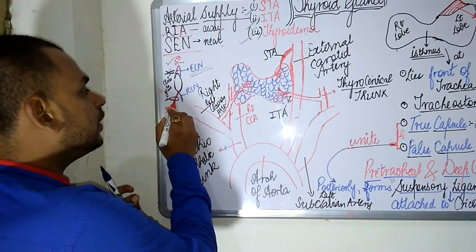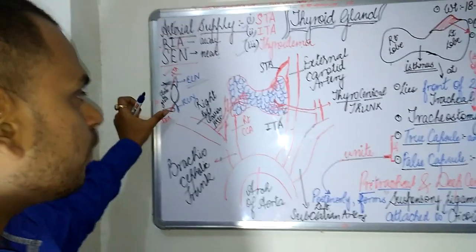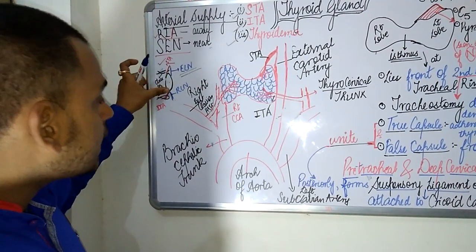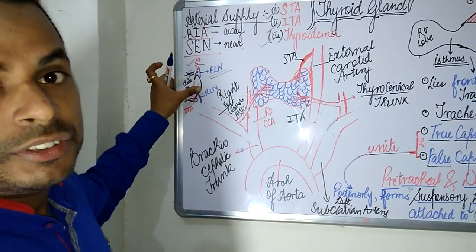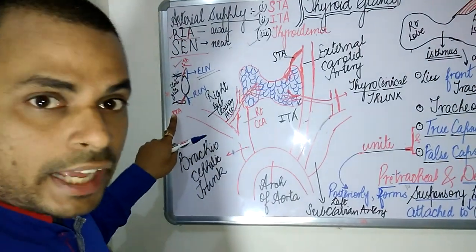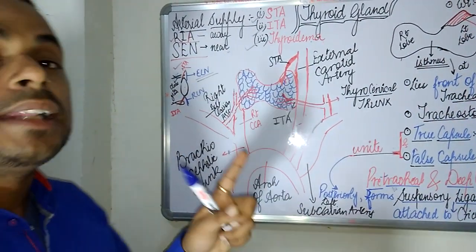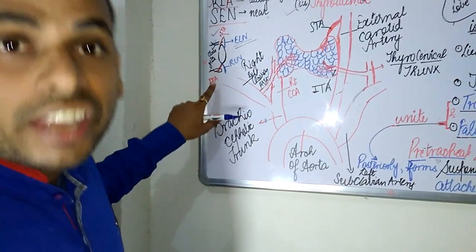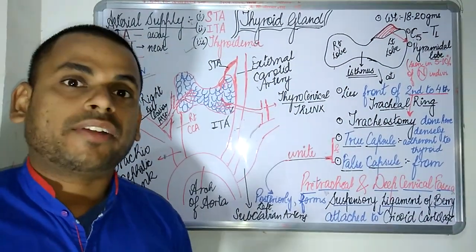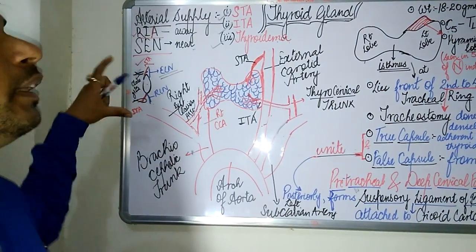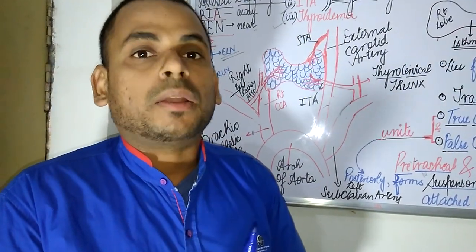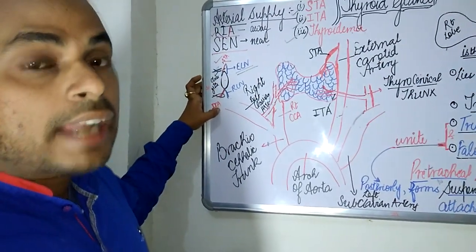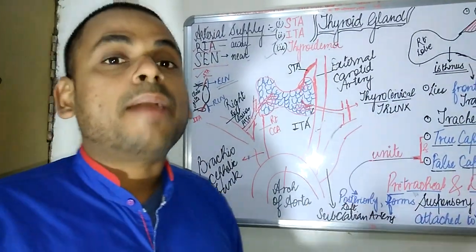For the inferior thyroid artery, the recurrent laryngeal nerve lies in close proximity towards the substance of the gland. Therefore, at the time of surgery, the ligation of the inferior thyroid artery should always be done away from the gland, to prevent any damage to the recurrent laryngeal nerve. In summary: superior thyroid artery — ligate close to the gland; inferior thyroid artery — ligate away from the gland.